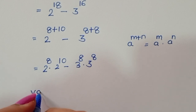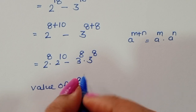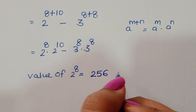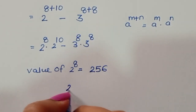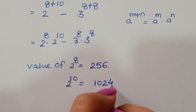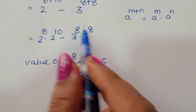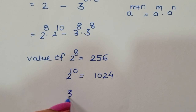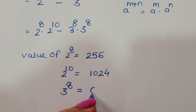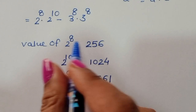Now we find the values. 2 power 8 is equal to 256. 2 power 10 is equal to 1024. Next, 3 power 8: multiplying 3 eight times gives 6561.